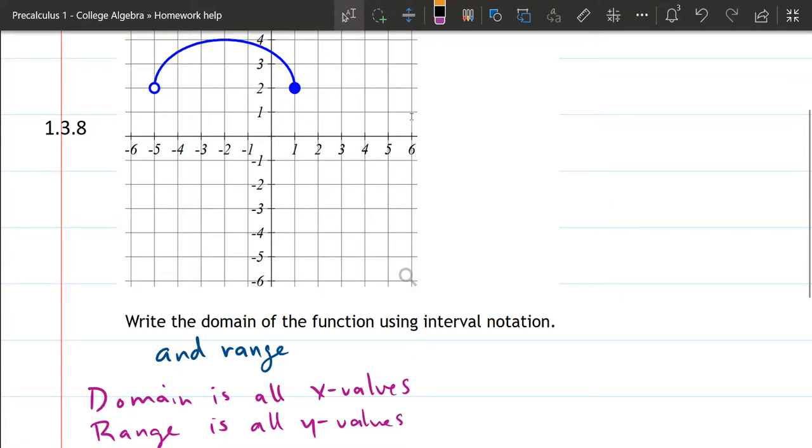We're in 1.3, question 8, and we're looking at domain and range of a function based on a graph. So what's the domain? All the inputs are all the x values. We're going to start with the domain. So what x values is this function using?